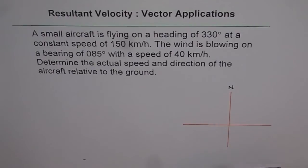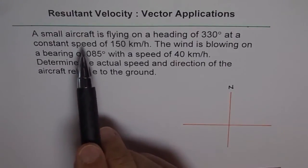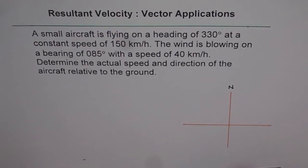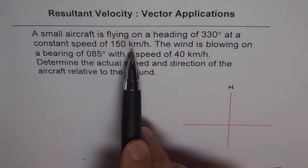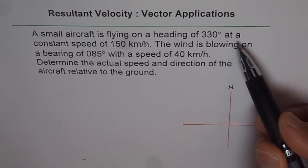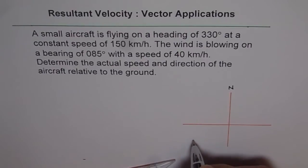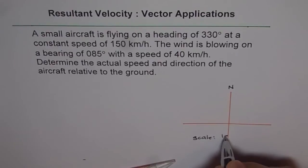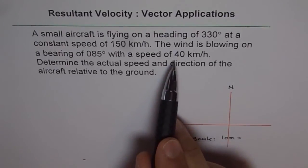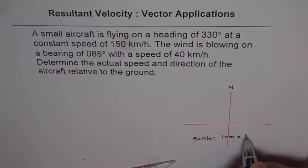This is our center O, and that is east. First, read the problem again, understand the situation, and then sketch it. A small aircraft is flying on a heading of 330 degrees at 150 kilometers per hour. To represent it on a vector diagram, a vector has two components: magnitude and direction. Magnitude is 150 km/h, so we need a scale. Let's say scale is 1 centimeter equals 50 kilometers per hour.